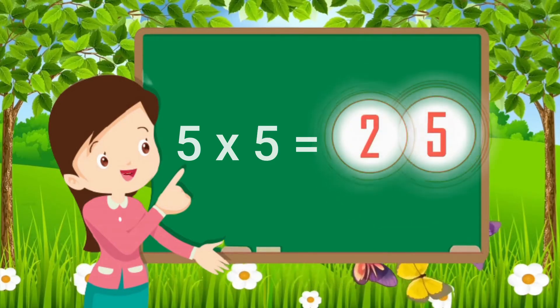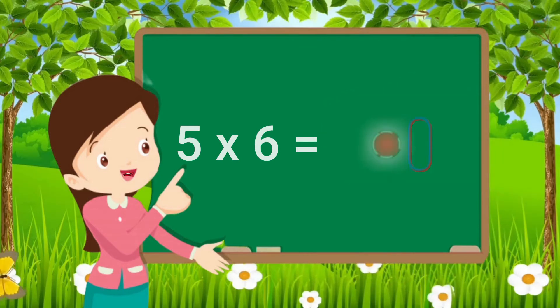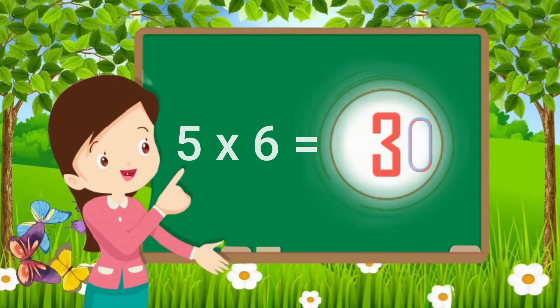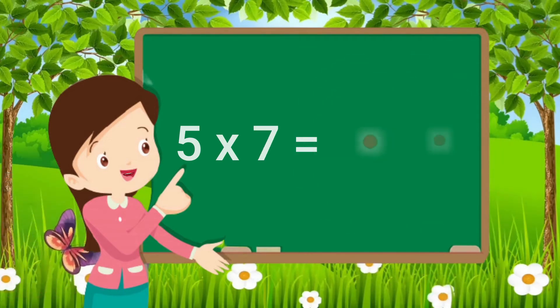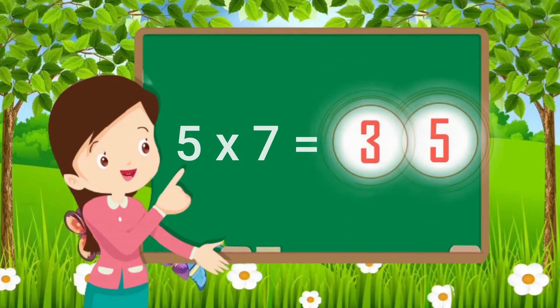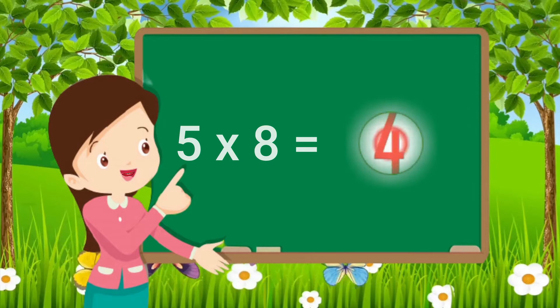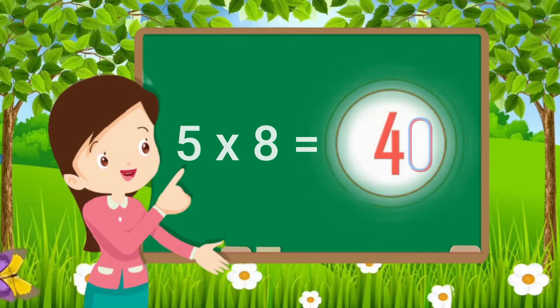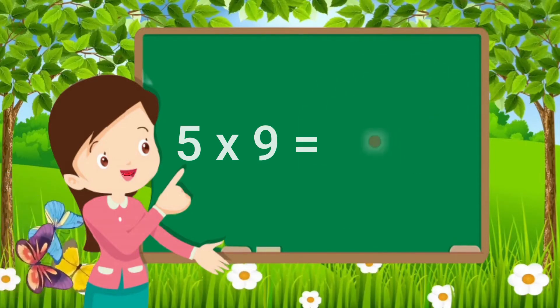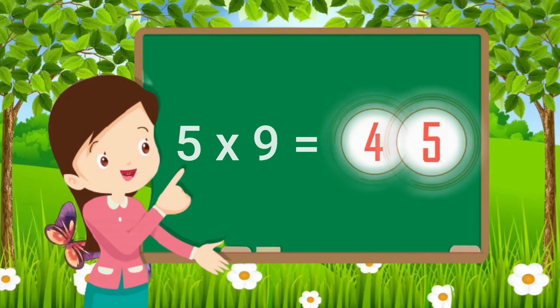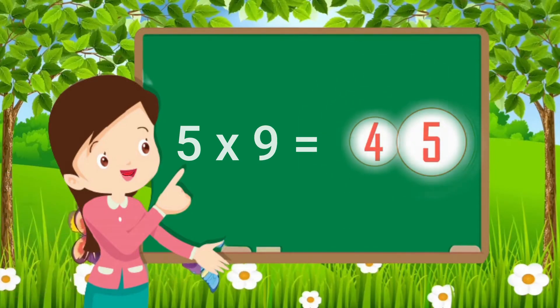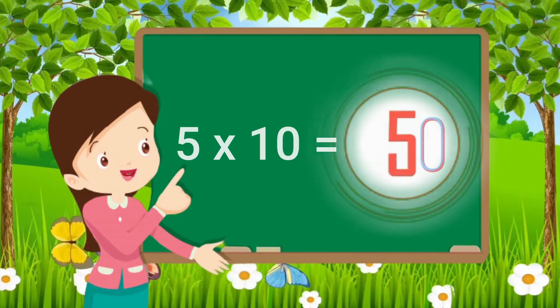Five fives are twenty-five. Five sixes are thirty. Five sevens are thirty-five. Five eights are forty. Five nines are forty-five. Five tens are fifty.